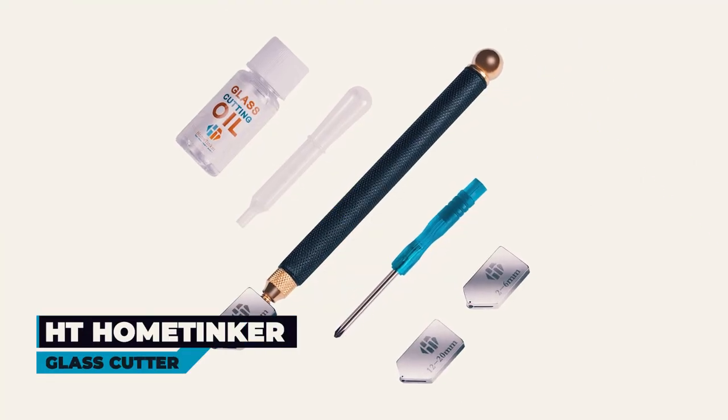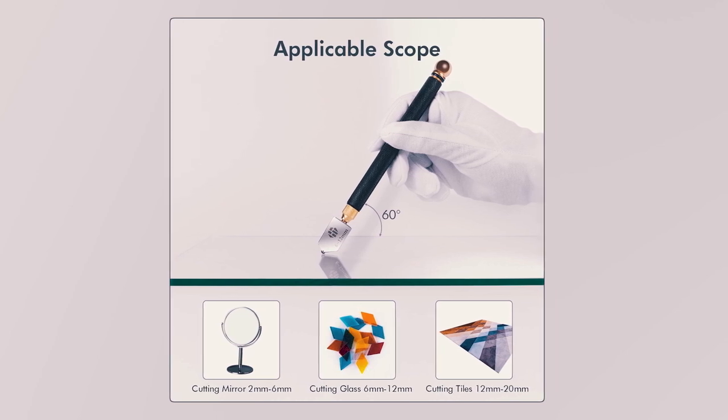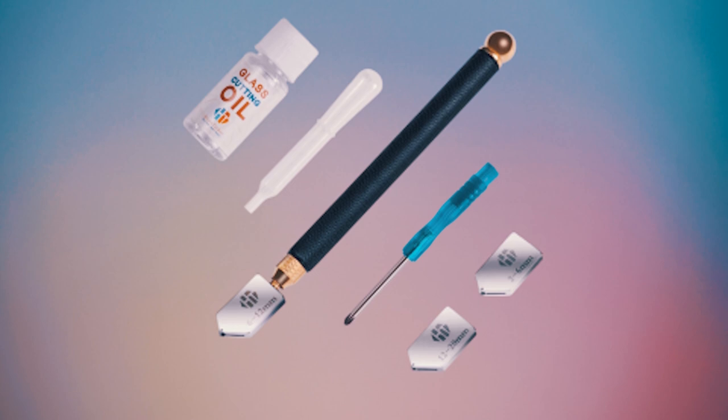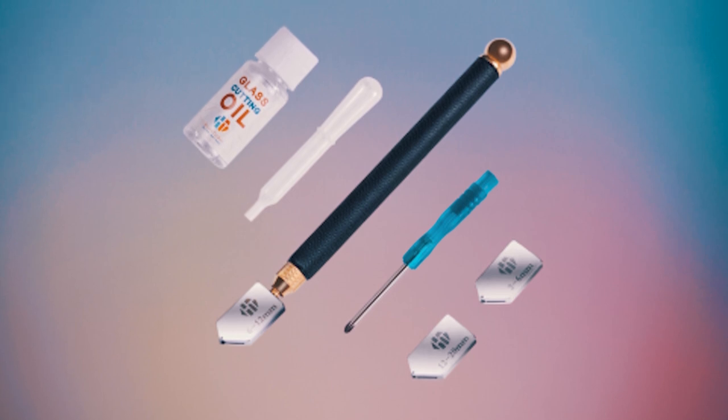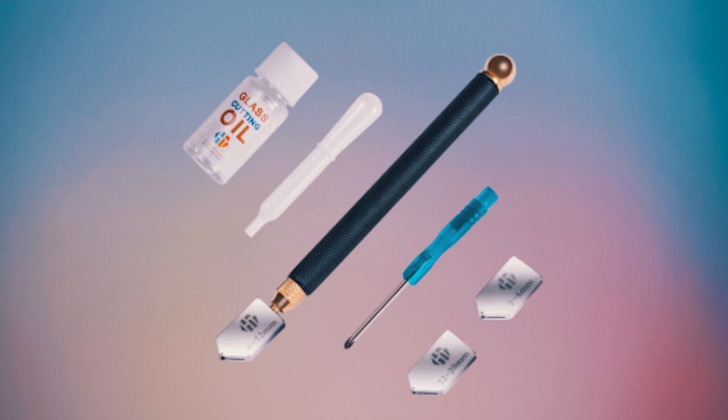HT Home Tinker Glass Cutter. Searching for an all-in-one solution to your glass cutting needs? The HT Home Tinker Glass Cutter is a comprehensive kit offering everything you need for precise glass work, including tools capable of making over 10,000 clean cuts.